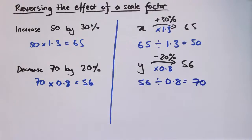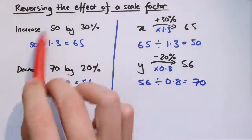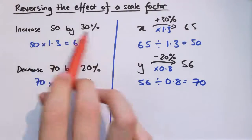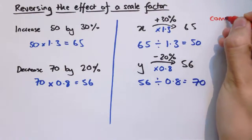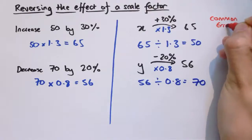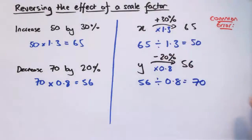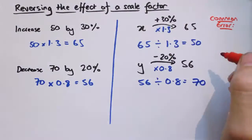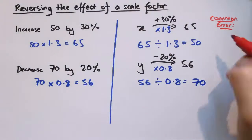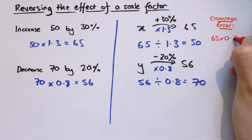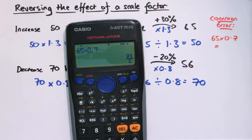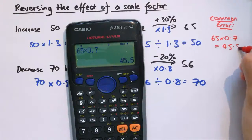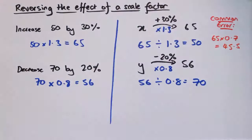This often confuses people. Students often make the mistake of thinking that if you want to undo an increase of 30%, you could just decrease it by 30%. So the most common mistake would be to answer this problem by saying: to undo 30%, that's a scale factor of 0.7, so do 65 times 0.7. And that gives us 45.5 — which hasn't got us back to 50. That hasn't worked.